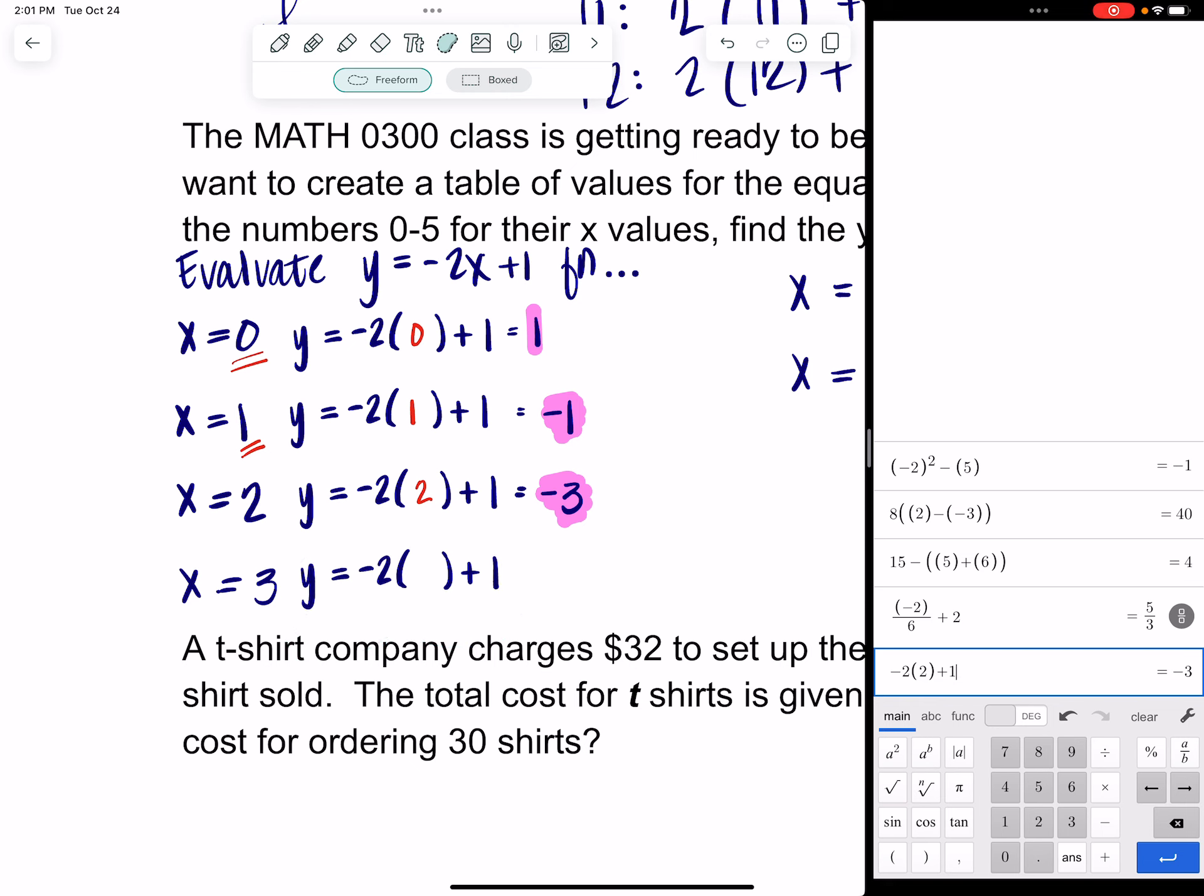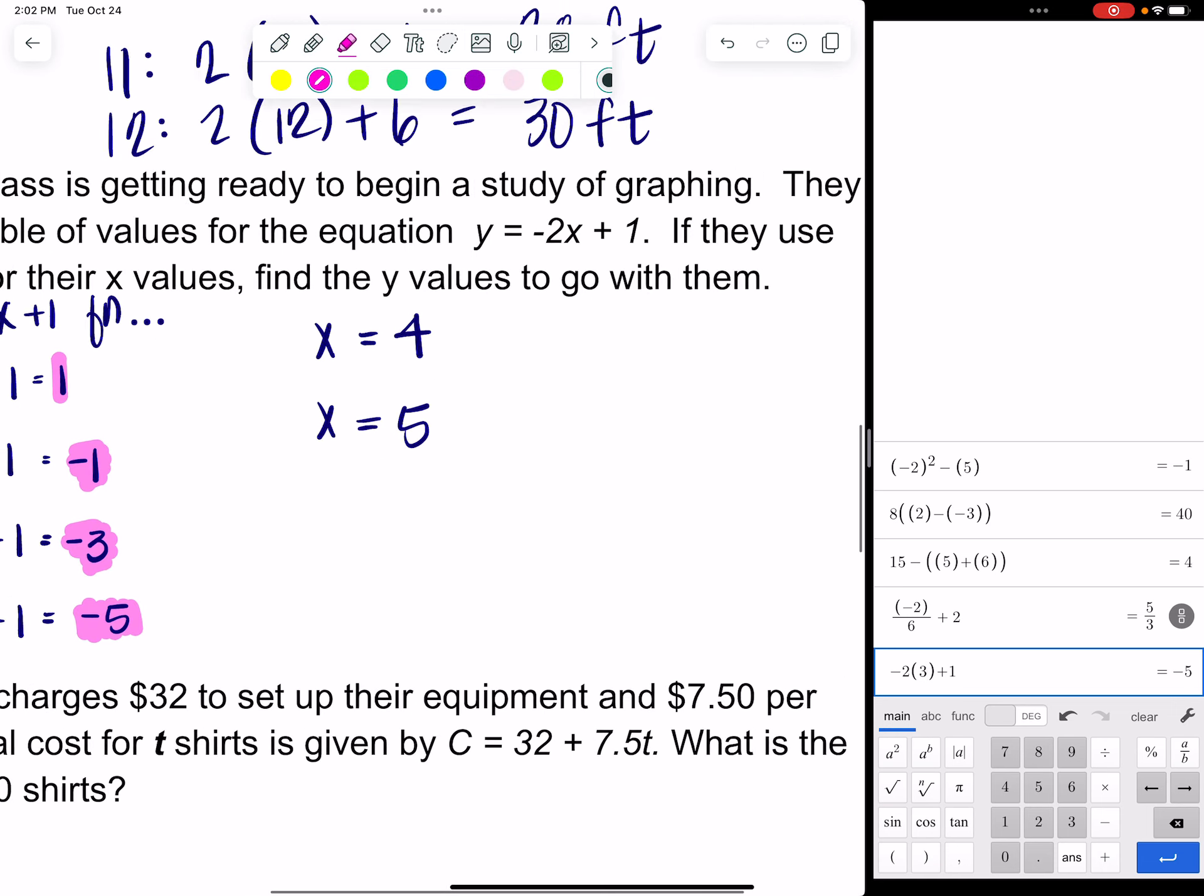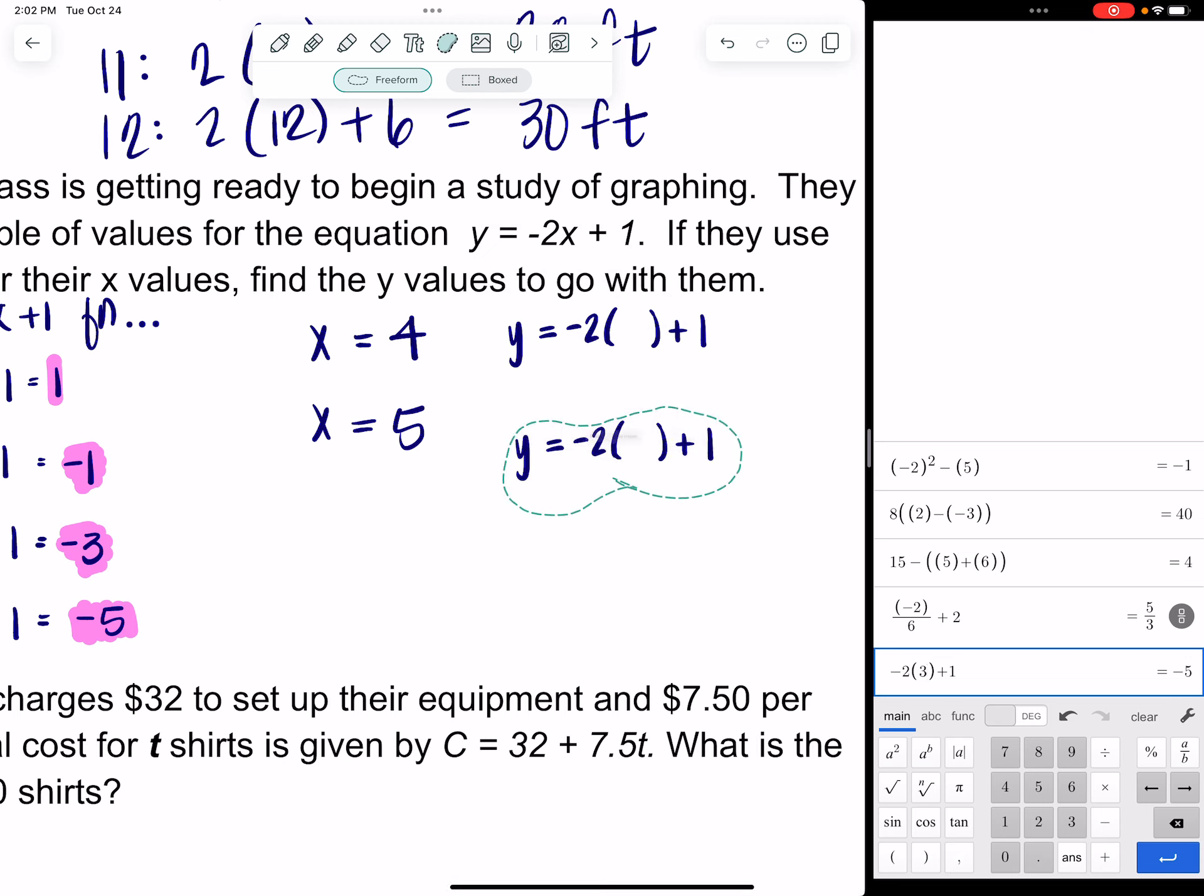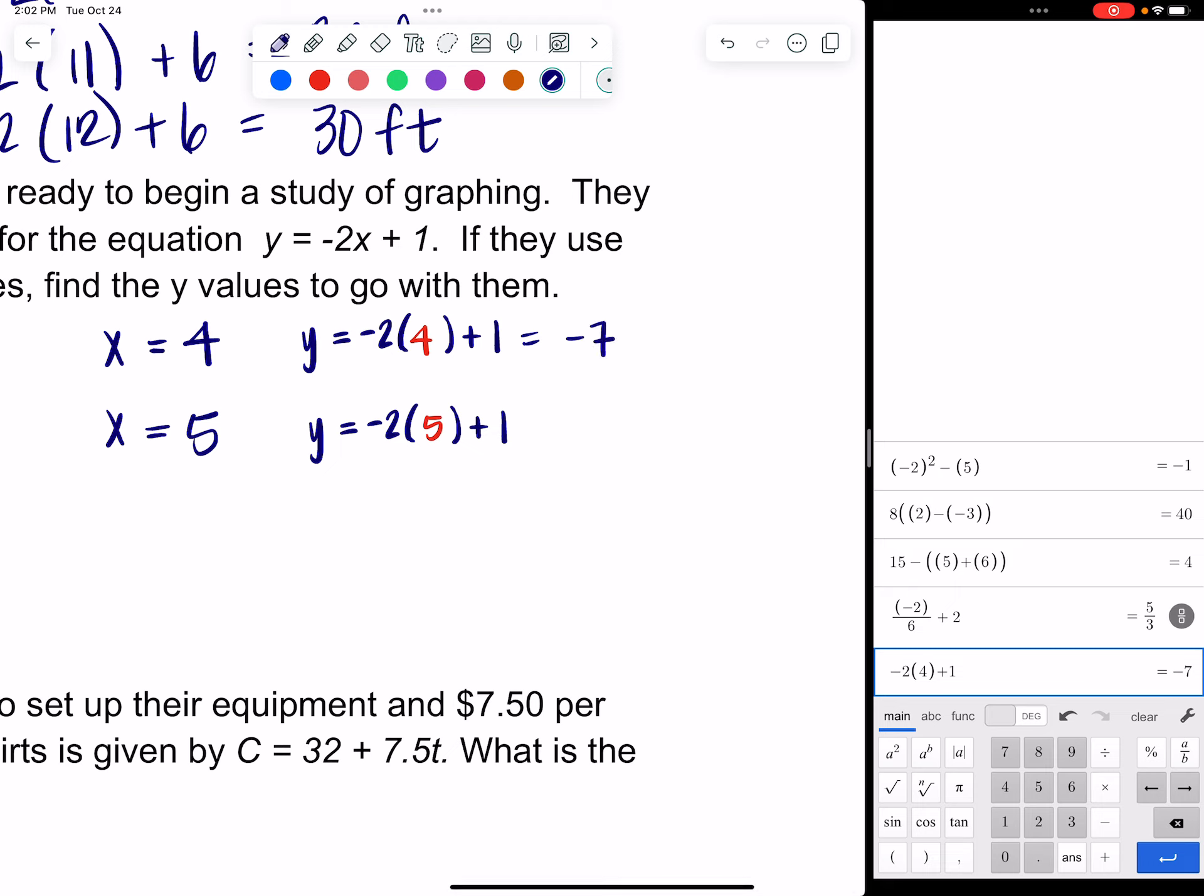I'm going to evaluate for x equals 3. I'm going to get a little lazy on you and I'm going over here. All I'm going to do is delete the 2 from the last one and replace it with a 3. I get a negative 5 for my y value. I'm going to do the same thing for the 4 and the 5. I'm going to back out and take out the 3 and insert a 4. So when x is 4, y is negative 7. Substitute 5 and I get a negative 9.